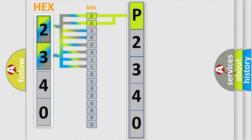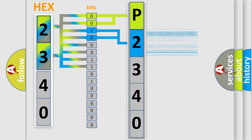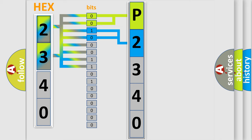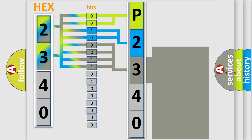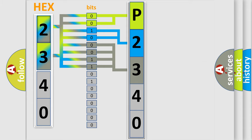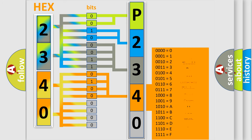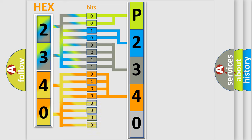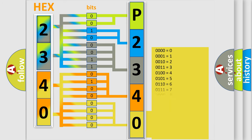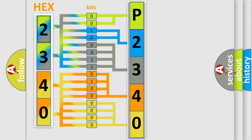The next two bits determine the second character. The last bits of the first byte define the third character of the code. The second byte is composed of a combination of eight bits. The first four bits determine the fourth character of the code, and the combination of the last four bits defines the fifth character. A single byte conceals 256 possible combinations.